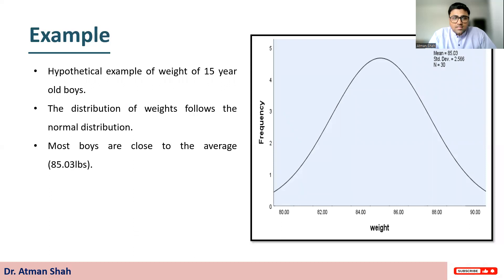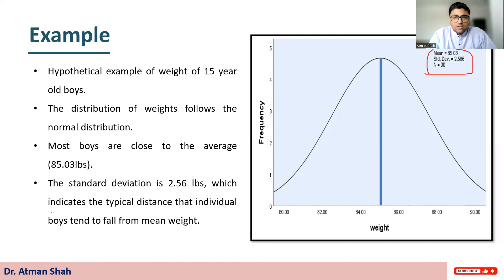Most boys are close to the average. So this is the average. You can see here average and the value of standard deviation. So the standard deviation is 2.56 which indicates the typical distance that individual boys tend to fall from the mean weight.